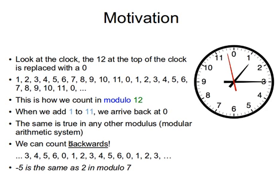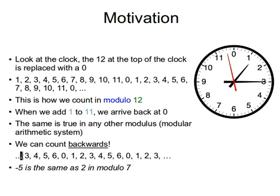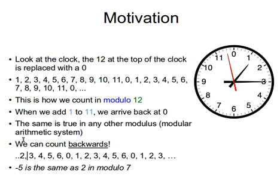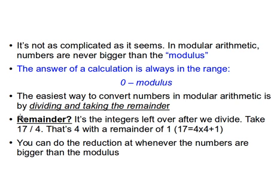We can also count backwards if we want. For example, in modulo 7 we say 0, 1, 2, 3, 4, 5, 6, 0, 1, 2, 3, and so on. So minus 5 is actually 2 in modulo 7. The proof: if you move to the right that's positive, if you move to the left that's negative. So going left from 0: minus 1, minus 2, minus 3, minus 4, minus 5 lands on 2. So minus 5 is the same as 2 in modulo 7.